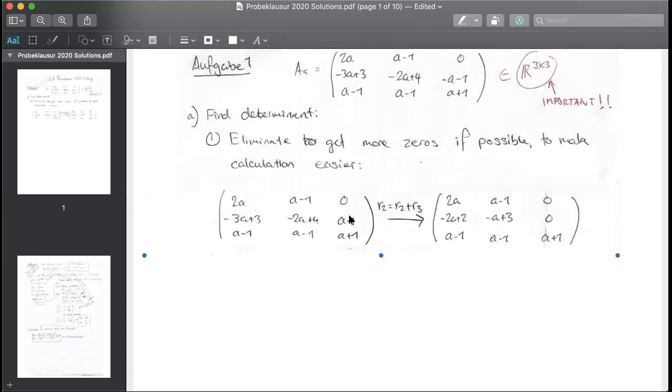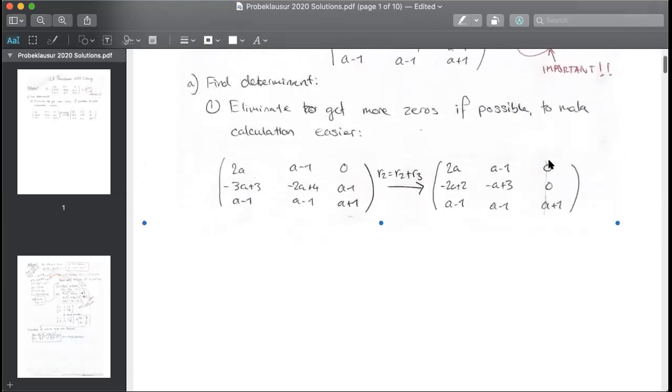And you do that by, here I've decided to make a zero here. And I do that by adding the third row to the second row to get the new second row. So if you do that, it's quite simple. You get this. And now you see that you have two zeros in the third column. Now we're ready to start our calculation. There's no point in trying to simplify it further.